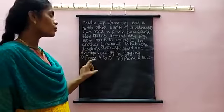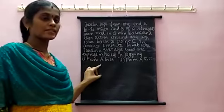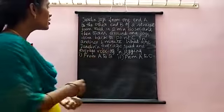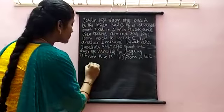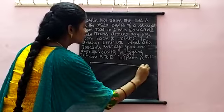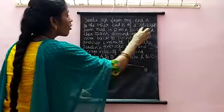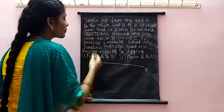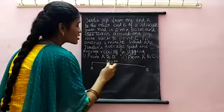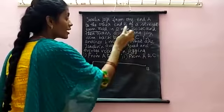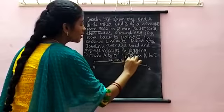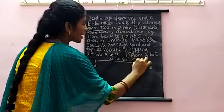Now we will look at a numerical on average speed and average velocity. Jocelyn jogs from one end A to the other end B of a straight 300 meter road. The distance from A to B is 300 meters. She covers it in 2 minutes 50 seconds.